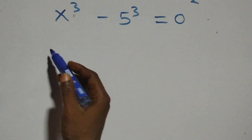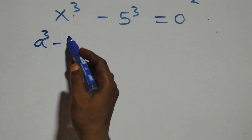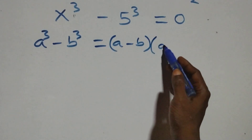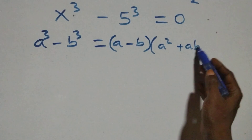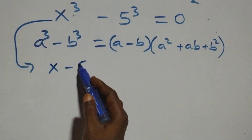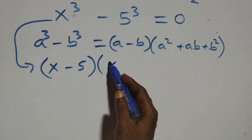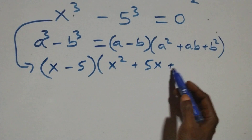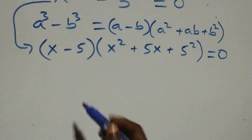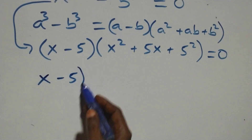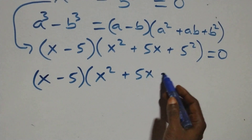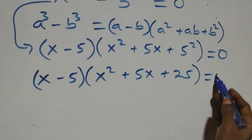Now solving the second case, this follows the identity a cubed minus b cubed equals a minus b times bracket a squared plus ab plus b squared. Applying this, what we have becomes x minus 5 times bracket x squared plus 5x plus 25, close bracket, equals to 0.